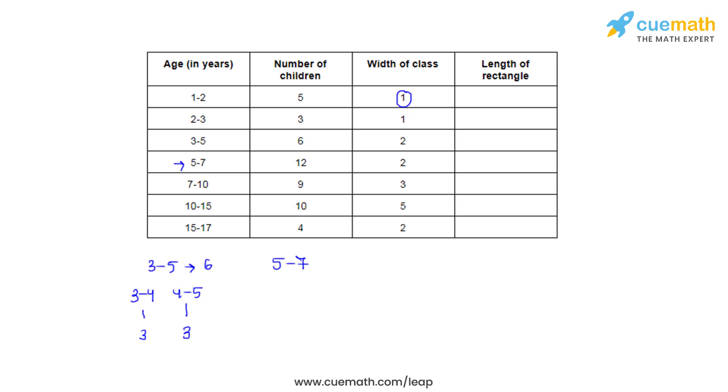So that basically can be written as: we will start with the first one, we need not change anything so the frequency remains 5 as it is. For the second one also the frequency remains as it is, which is 3.